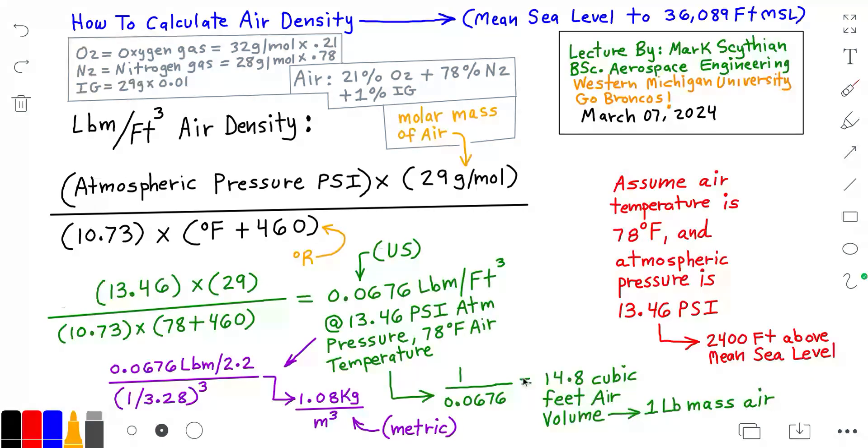If this needs to be converted to the metric measurement for air density, kilograms per cubic meter, simply divide the pounds mass into 2.2, then divide the quantity of 1 into 3.28.